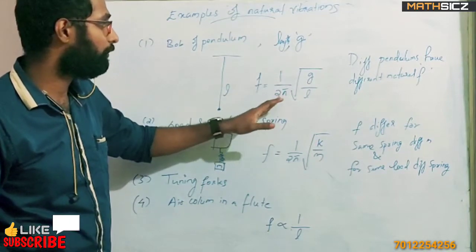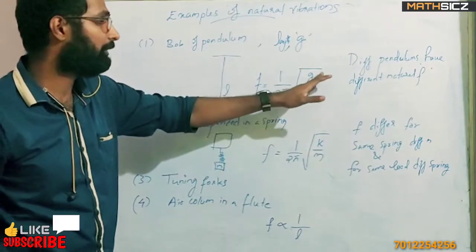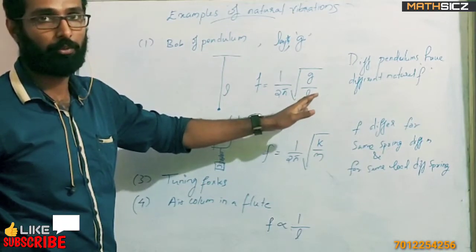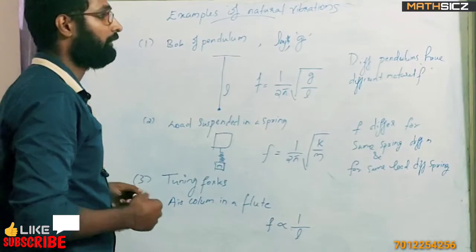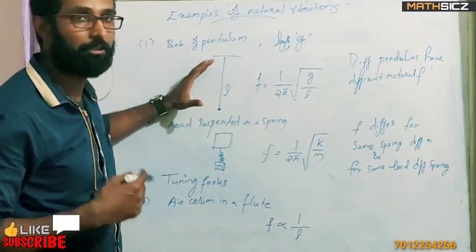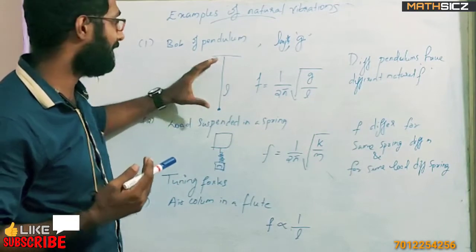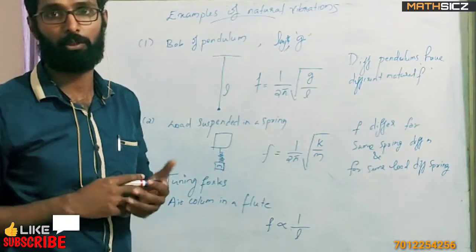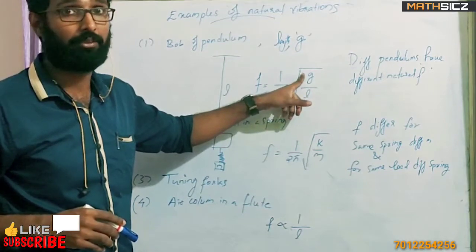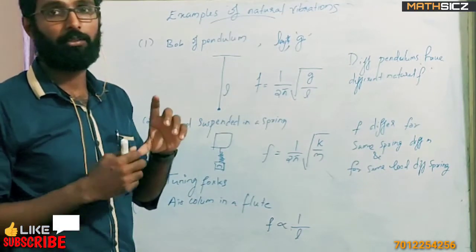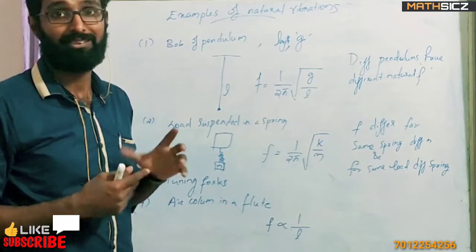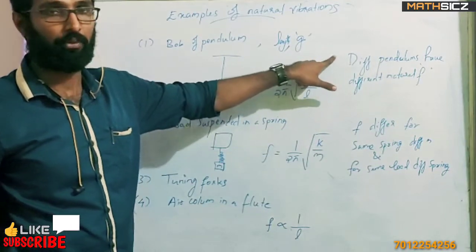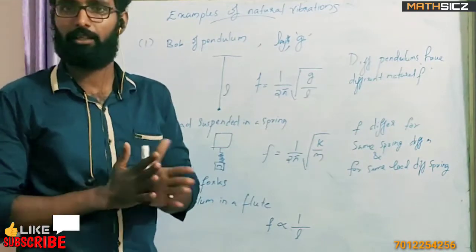The frequency is 1 by 2π into root of g by L. That is the equation. That is the acceleration due to gravity with which the pendulum vibrates, and L is the length of the pendulum. Different pendulums have different natural frequencies. If we can see the vibration and change the length a little bit, it will change the vibration and change the natural frequency. That is the same principle.